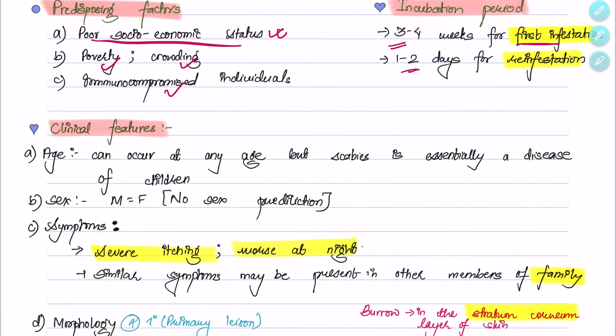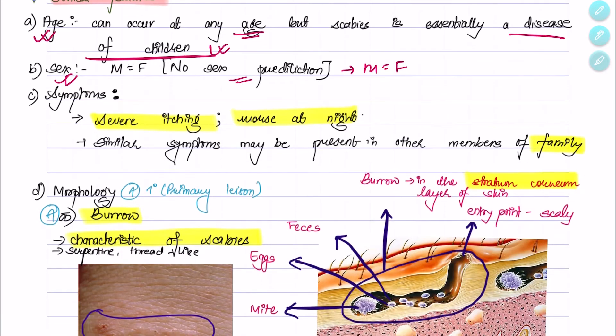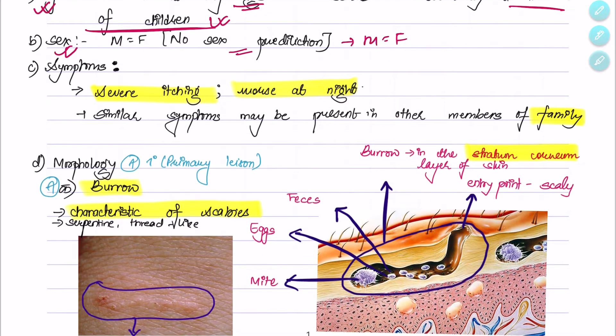Talking about the clinical features: regarding age, it can occur at any age but is essentially a disease of children. Regarding sex, there is no sex predilection—it can occur equally in males and females. Regarding symptoms, there will be severe itching, usually worst at night, and similar symptoms may be given by other members of the family.